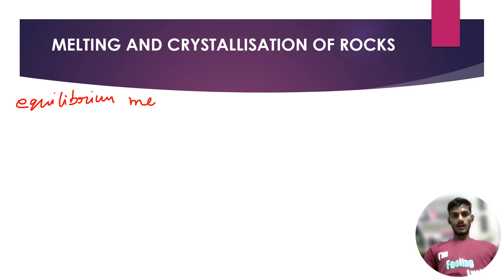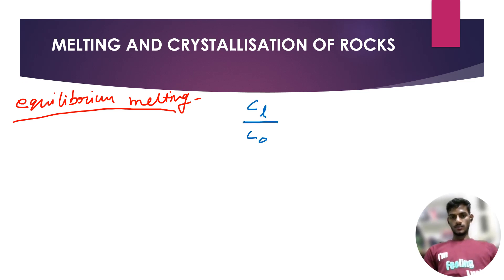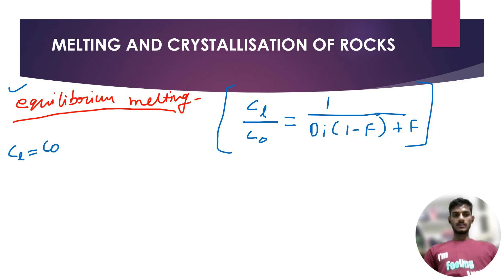First we will see equilibrium melting. It is simply melting where the produced melt and the solid rock are both in contact — they are not separated. The formula, which I'll write in blue, is: CL divided by CO equals 1 divided by (D times (1 minus F) plus F). This describes the concentration of an element in equilibrium melting. CL stands for the concentration of the element in liquid.